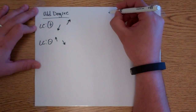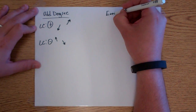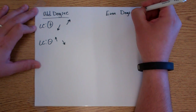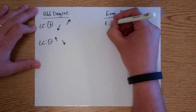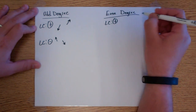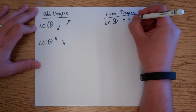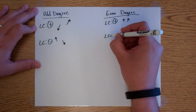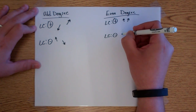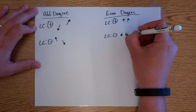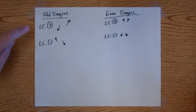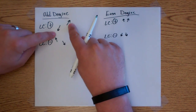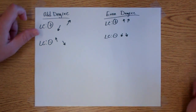We're going to go over some examples of this, so it'll make more sense shortly. If you have an even degree and a positive leading coefficient, it's going to go up to the left and up to the right. If you have a negative leading coefficient with even degree, it's going to go down to the left and down to the right.